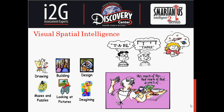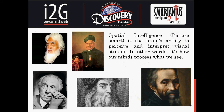Visual-Spatial Intelligence, or Picture Smart — we often say a picture is worth a thousand words, or seeing is believing. This intelligence represents the knowing that occurs through the shapes, images, patterns, designs, and textures we see with our external eyes, but also includes all of the images we are able to conjure up inside our heads.